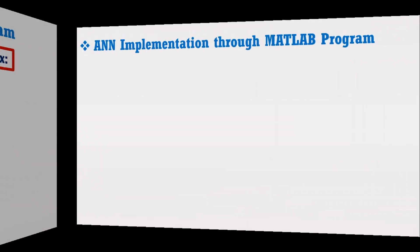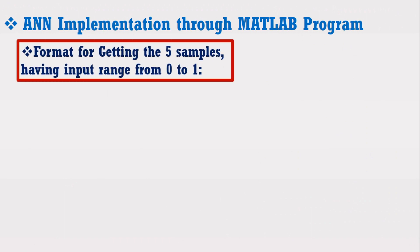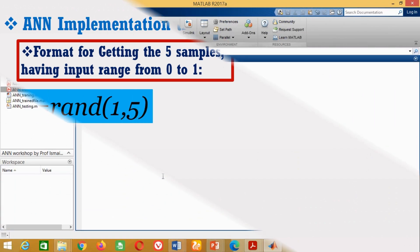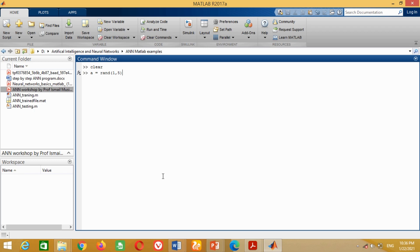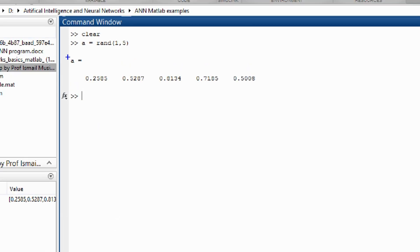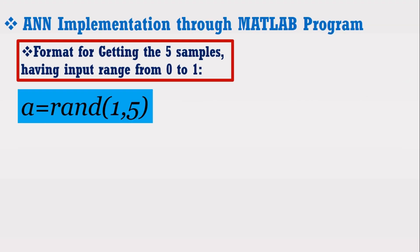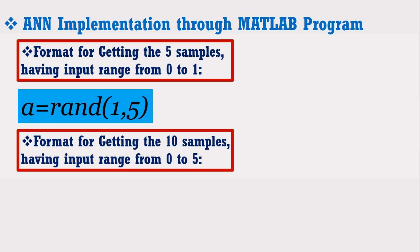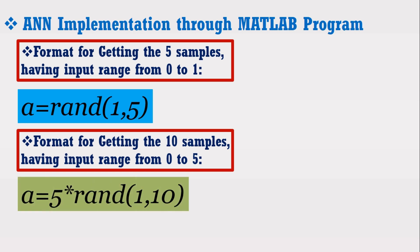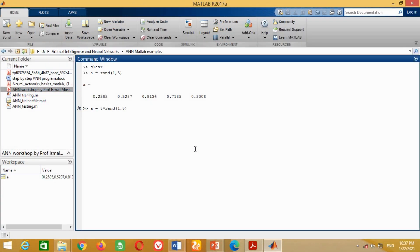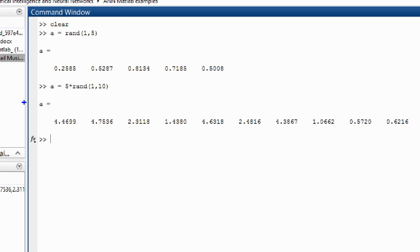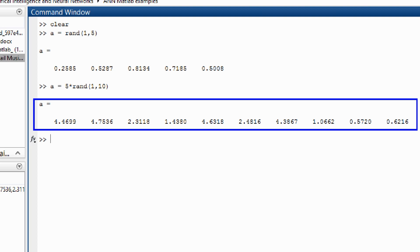Suppose if we want to produce 5 samples within range 0 to 1, the syntax becomes rand(1,5). Let me show you this in MATLAB — just write this code on the command window and press enter. You can see MATLAB has generated 5 random numbers within the range of 0 and 1. Now suppose we want to increase the range from 0 to 5 and samples up to 10: 5 is multiplied to increase the range, and 10 is written to get the total number of samples. MATLAB generates 10 random numbers having range within 0 and 5.